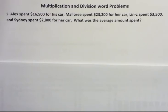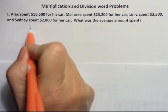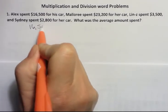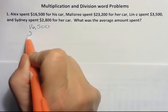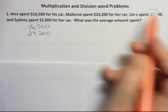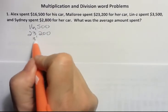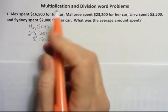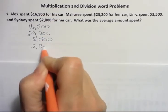To find the average we want to add up everything that we're given and then divide by the number of add-ins, or the number of things that we added. So what do we have in this problem? $16,500, $23,200, $3,500, and $2,800.